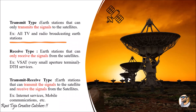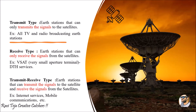This particular earth station will not receive any kind of signal — it is only used for transmission of signals to the satellites. The best examples are TV and radio broadcasting earth stations. These stations only transmit — there is just one operation — transmitting to a particular communication satellite. Whoever wants the data, such as a TV or telecom service provider, can then receive it from the satellite. So the best example of a transmit-type earth station is TV and radio broadcasting earth stations.